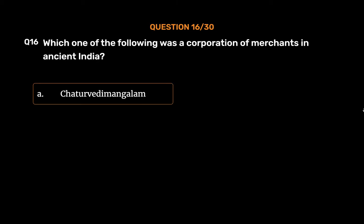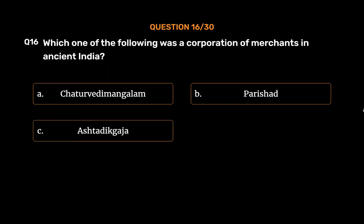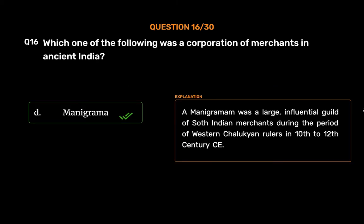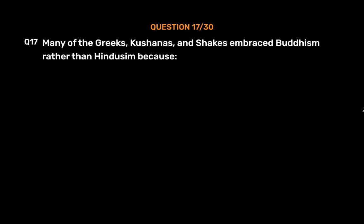Question number sixteen: Which one of the following was a corporation of merchants in ancient India? Option A: Chaturvedi Mangalam, Option B: Parishad, Option C: Ashtadiggaja, Option D: Manigrama. The correct answer is Option D, Manigrama. A Manigrama was a large, influential guild of South Indian merchants during the period of Western Chalukya rulers in the 10th to 12th century CE.